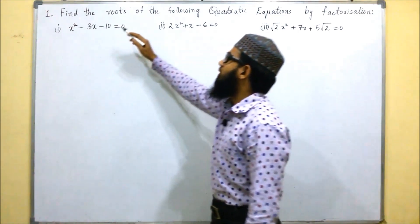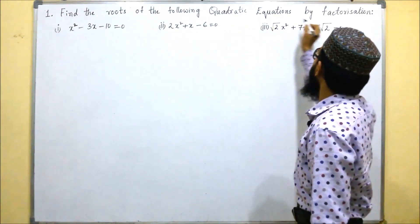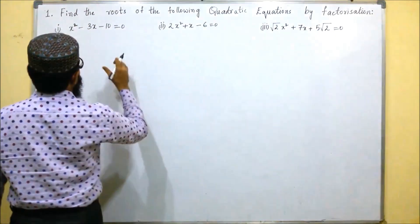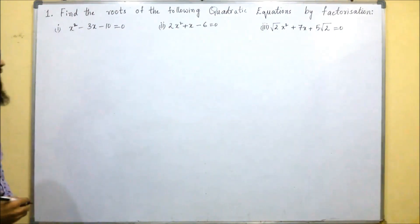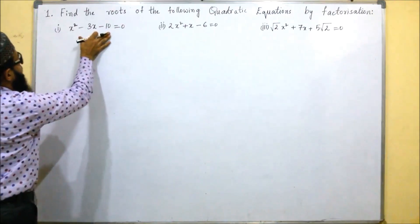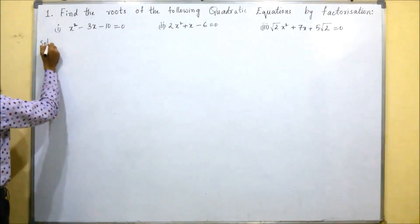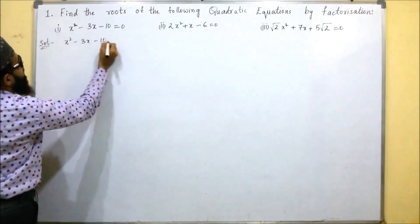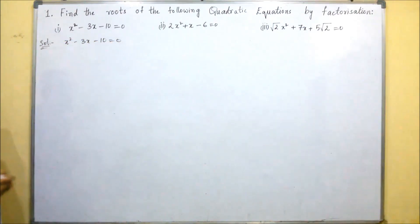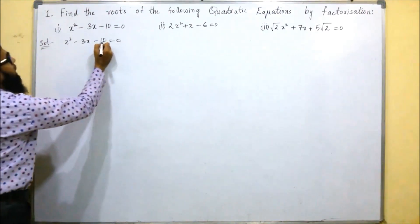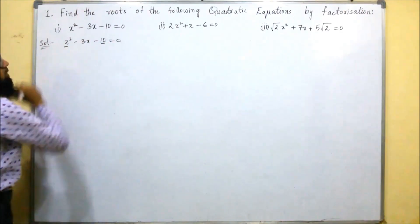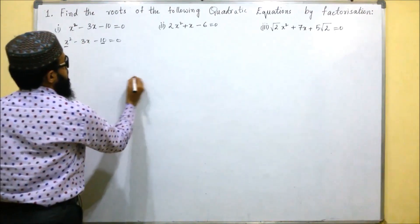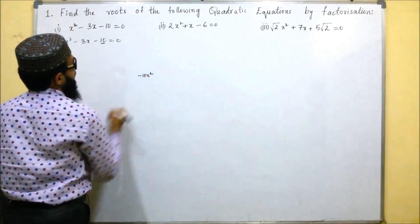This is the first problem: find the roots of the following quadratic equations by factorization method. So the first equation we are going to solve using factorization method. The given equation is x squared minus 3x minus 10 equals 0. For finding roots, first we will multiply the first term with the last term, so we will get minus 10x squared.